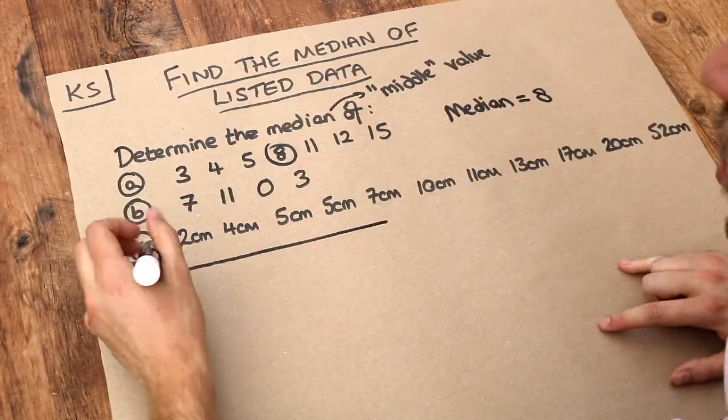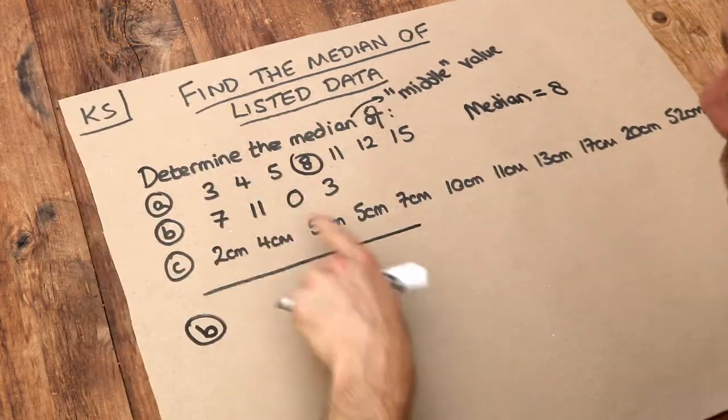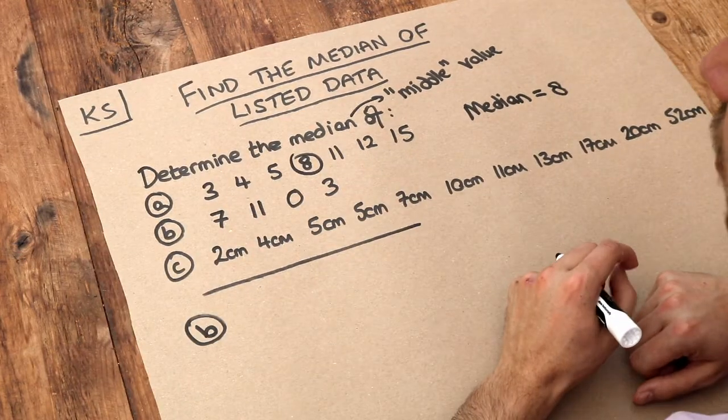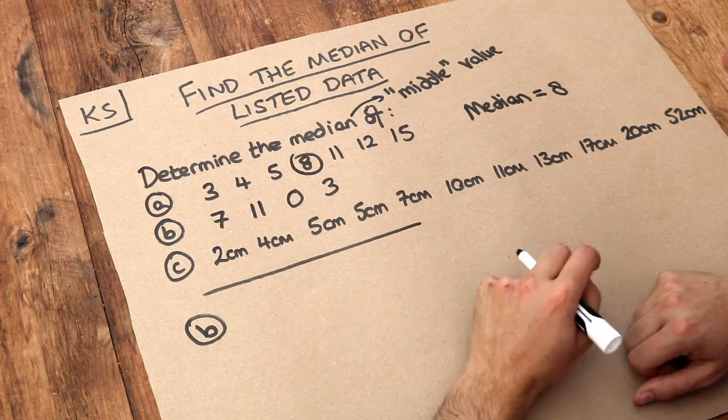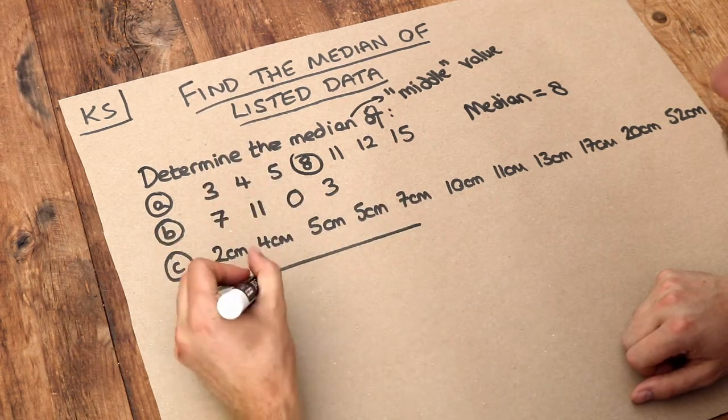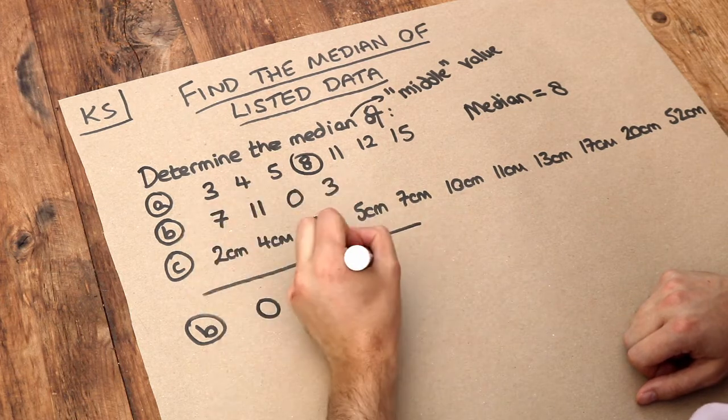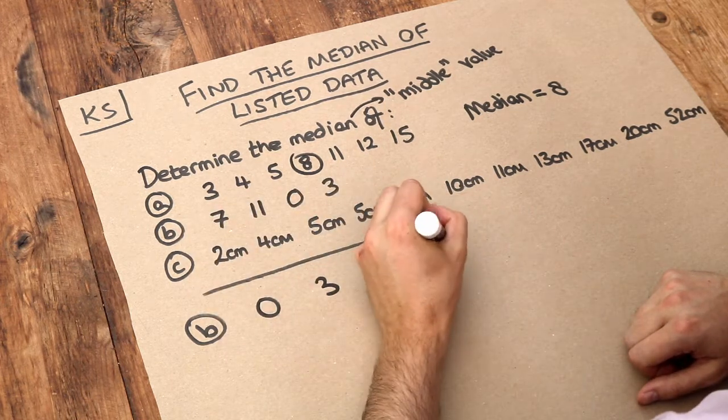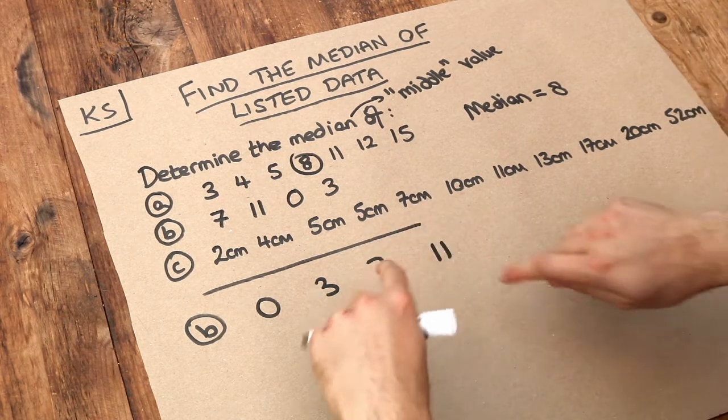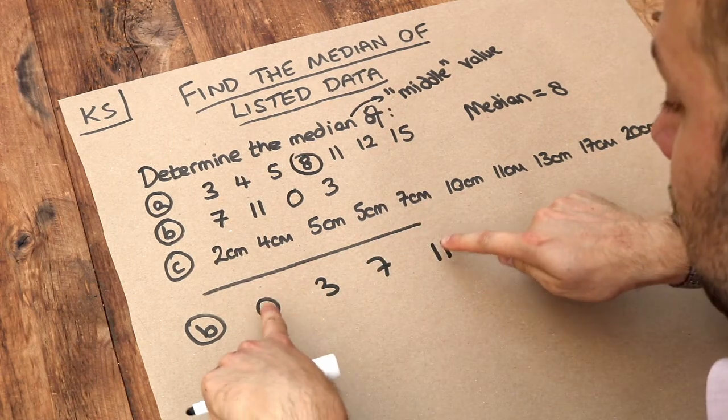Now B is a bit harder because the data is not in ascending order. So the first step would be to make sure the data is in ascending order: 0 is the smallest value, then 3, then 7, then 11. If we count inwards from the two ends, there is no middle value.